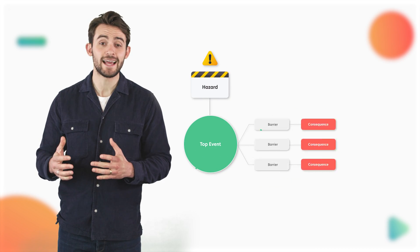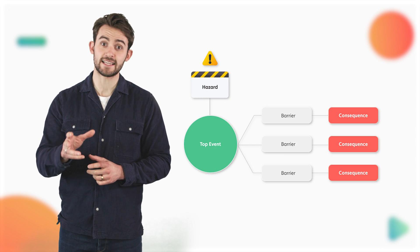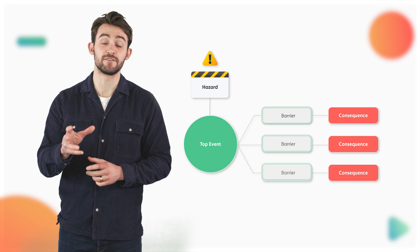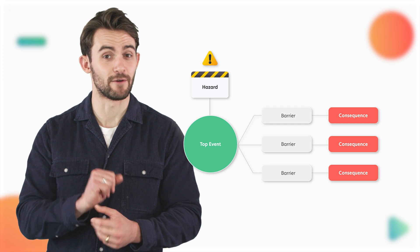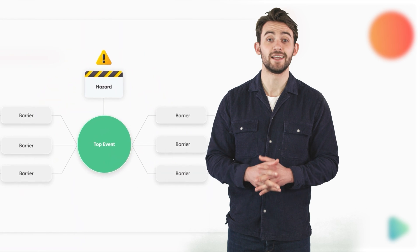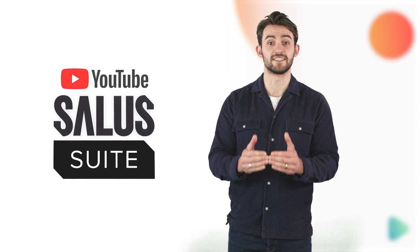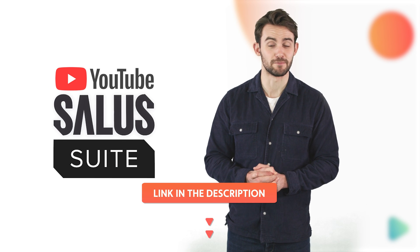In order to determine how severe a consequence is, you must assess how effective your barriers are in preventing or mitigating that risk. If that sounded like a lot of jargon and you're not familiar with consequences and barriers, definitely check out our video, Introducing Bowtie Terminology and Diagrams First. I've provided a link in the description below.